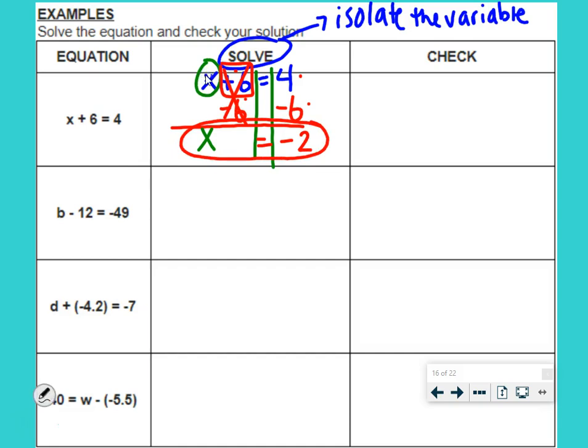To check it, we take the original equation, x plus 6 equals 4. And we replace x with our answer. So, we take negative 2, put it in for x, and check. This is what we did last set of notes, but we didn't have to solve it. We just checked it. Is negative 2 a solution? Negative 2 plus 6 is 4. Does 4 equal 4? Yes, it does.